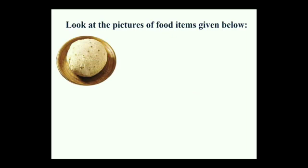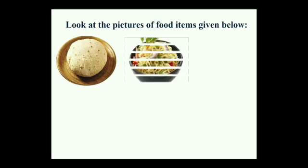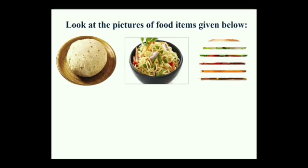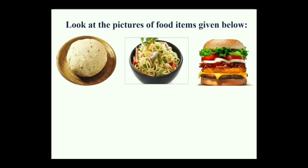Moving forward, we will look at 3 or 4 pictures. The first picture's food item is readily available in the kitchen and is made by our mother every morning and evening. Picture number 2 is a very lip-smacking yummy food item that we all like. Picture number 3 is even yummier and we all like to eat.